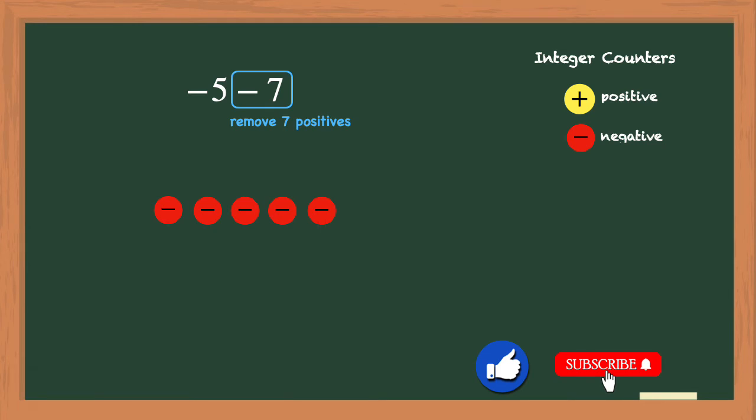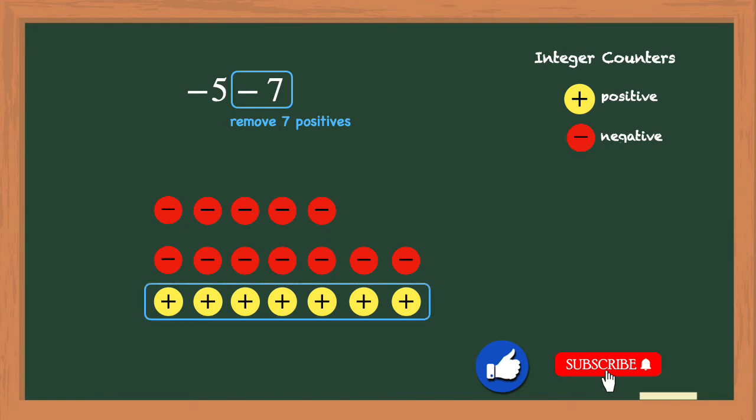But like the last problem, we don't have any positive counters to remove. So again, we'll need to use 7 zero pairs so that we will have positive counters to remove. So let's place those 7 zero pairs, and then we need to remove this group of 7 positive counters.